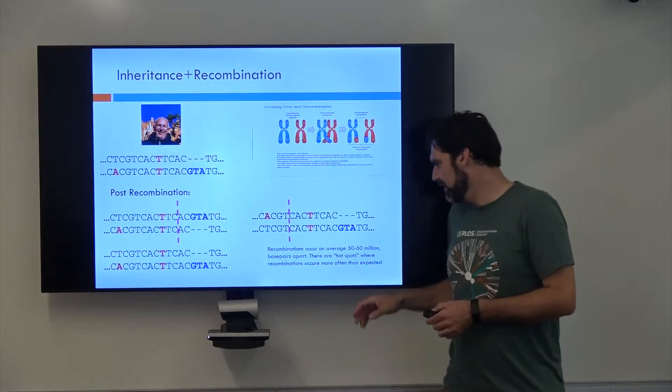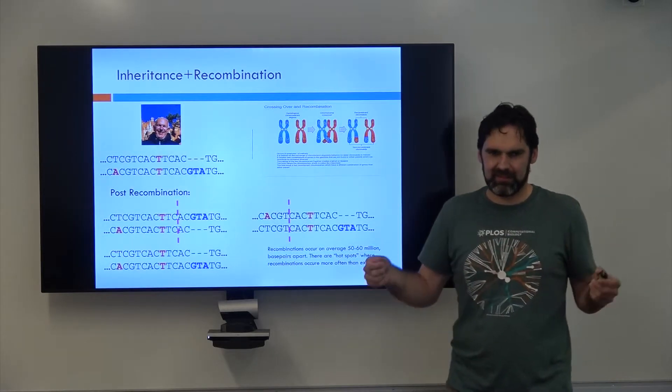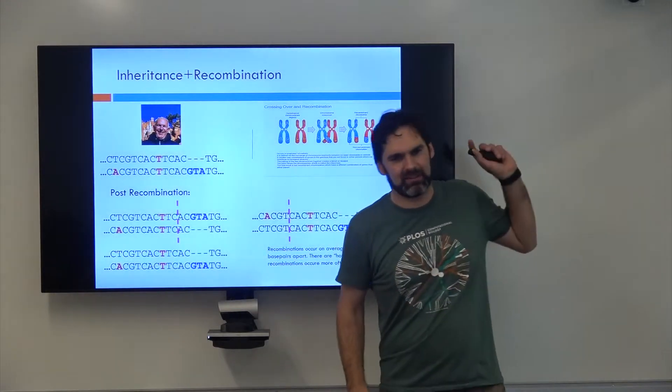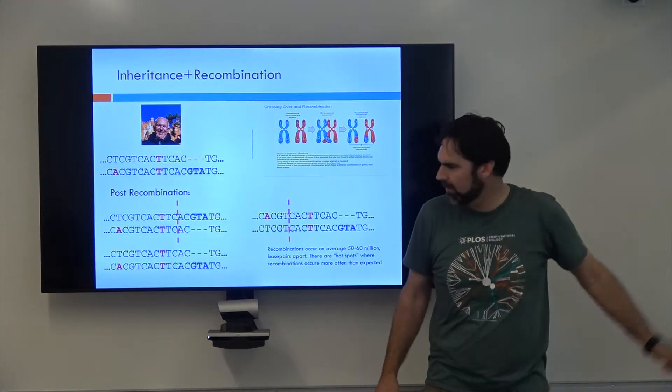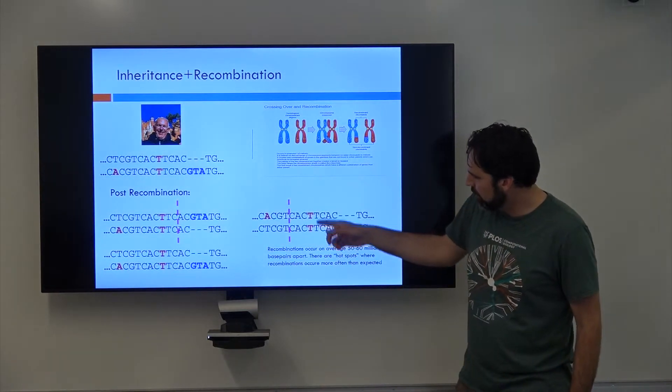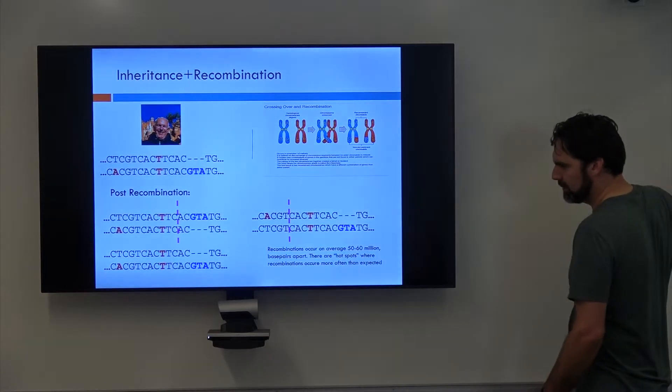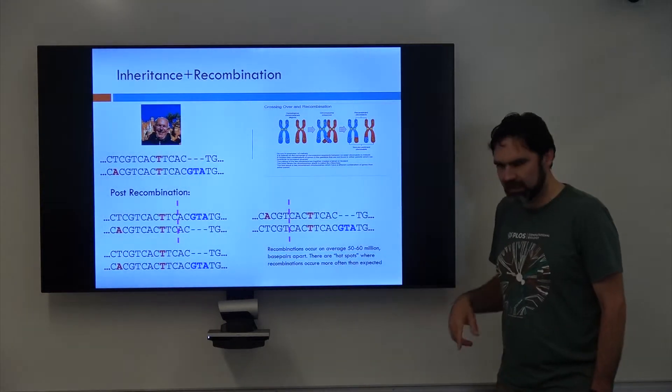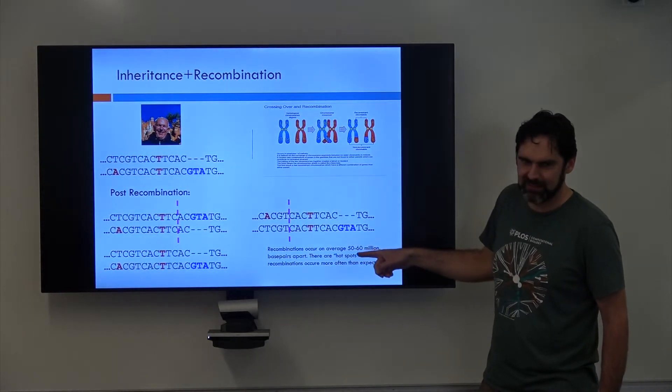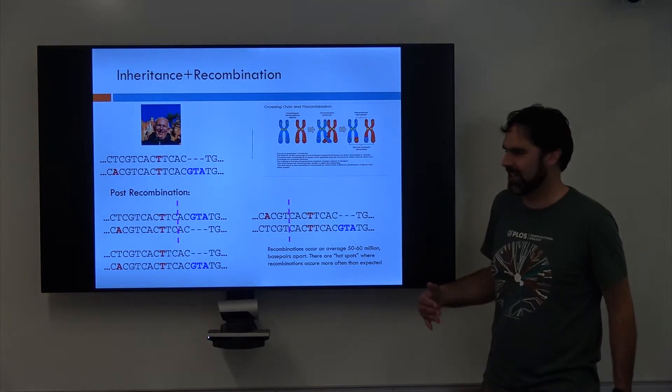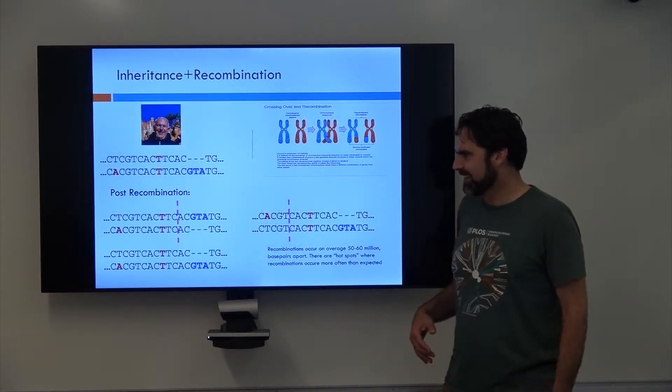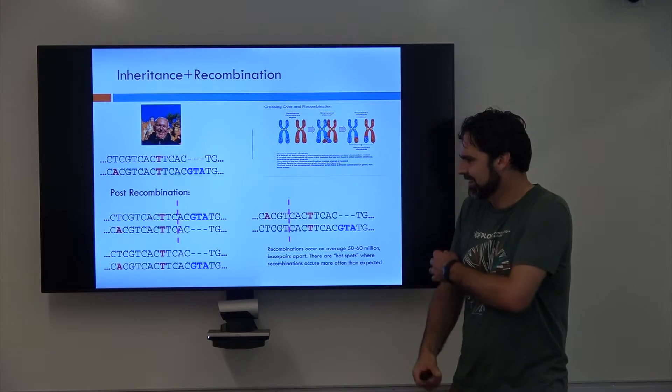So, recombinations occur every 50 to 60 million base pairs on average. So if I have one recombination here, on average, the next one's going to occur way down the genome there, right? So, let's look at this one. This one, let's say it occurred. And now you have a whole bunch of variation coming on, right? What's the probability of another recombination event occurring right here if the average distance between those 50 to 60 million is like zero, right? This is not going to happen. It's approaching zero. This happens millions of times in your body alone.